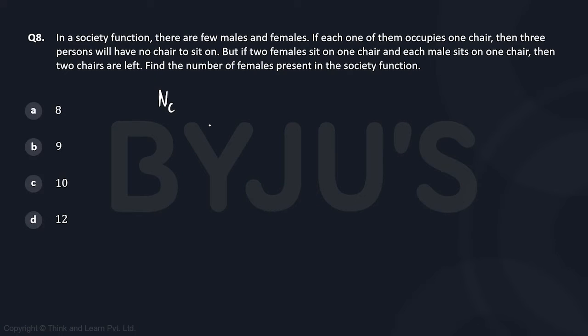is Nc, and if males occupy one chair each and females occupy one chair each, then the total number of people that are left are three people that have no chair to sit down.